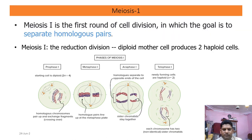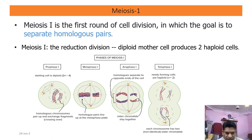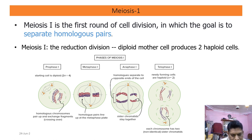What is Meiosis 1? Meiosis 1 is the first round of cell division, in which the goal is to separate the homologous chromosomes. In Meiosis 1, suppose we have four chromosomes — two pairs of homologous chromosomes. These homologous chromosomes pair up and are first separated. The goal of Meiosis 1 is the separation of homologous chromosomes, reducing a diploid cell to produce two haploid cells.